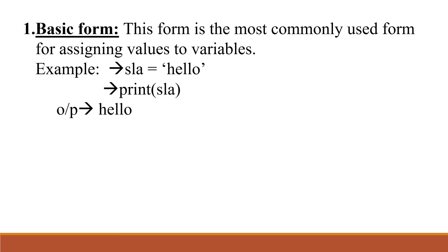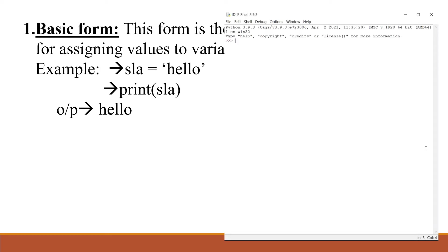The first basic form is the most commonly used form for assigning values to variables. For example, SLA is equal to single quotes 'alone', then print SLA will give the output as 'alone'.